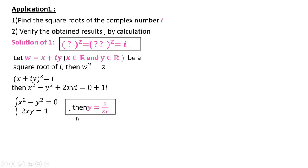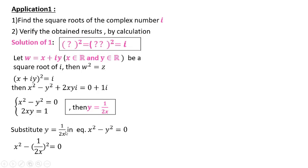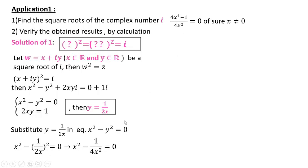From 2xy = 1, we get y = 1/(2x). Substitute y by its value in the first equation. Why can x not be 0? Simply because the product xy = 1/2, and the product xy cannot be 0. This is why neither of these real numbers can be 0.